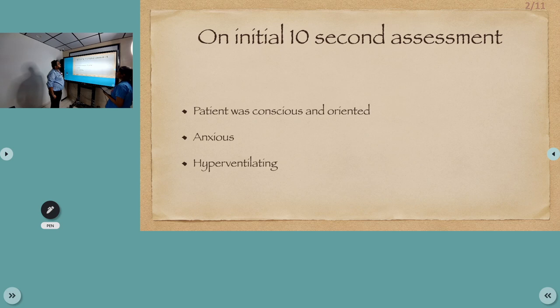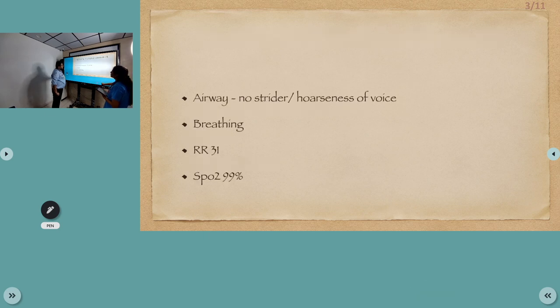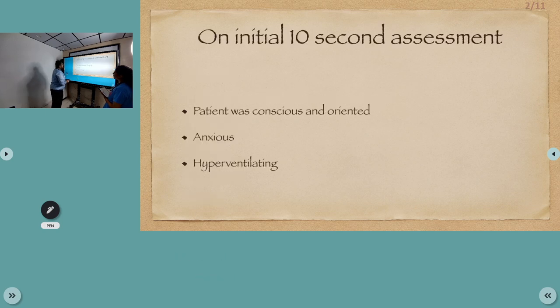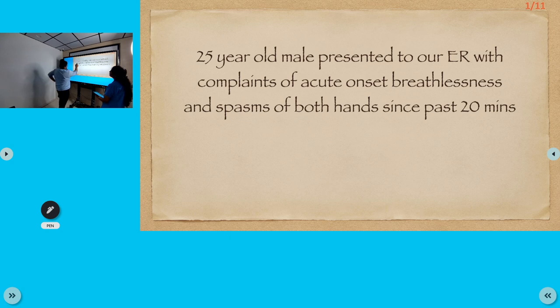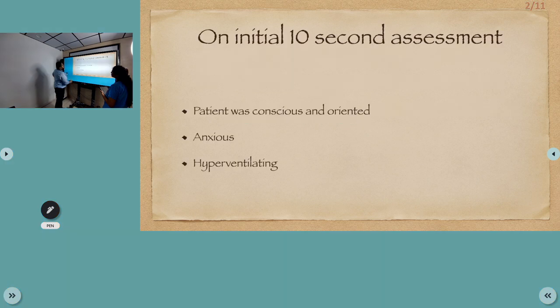On our initial 10-second assessment, the patient was conscious and oriented, but he was anxious and he was hyperventilating. Let's briefly review: a 24-year-old male with complaints of acute onset of breathlessness and spasm of both hands since past 20 minutes. So the patient presented with acute onset breathlessness along with spasms of both hands. On our assessment, patient was conscious and oriented, he was anxious and hyperventilating.